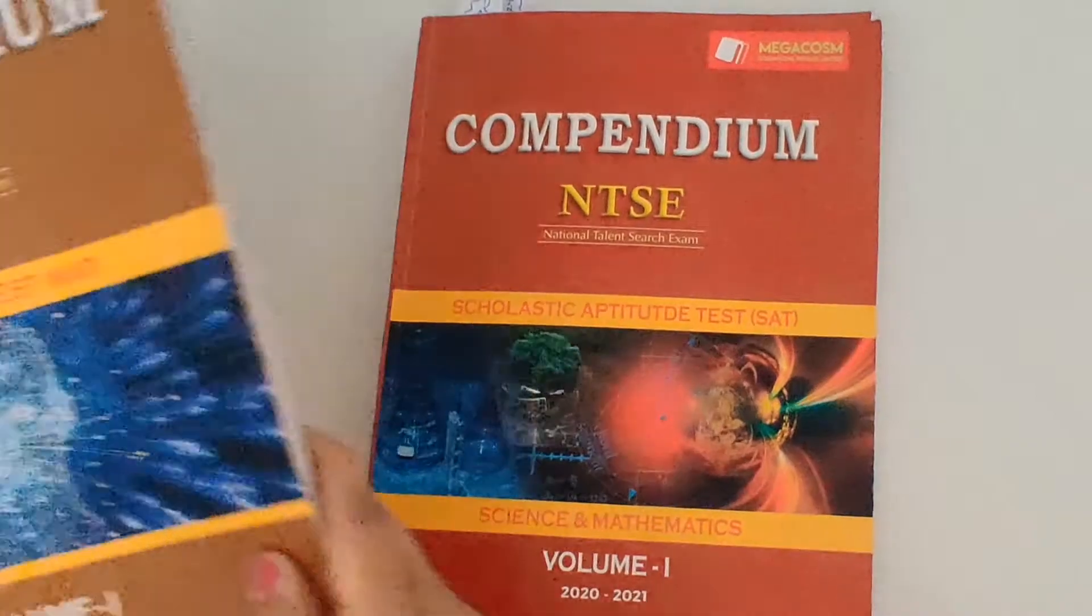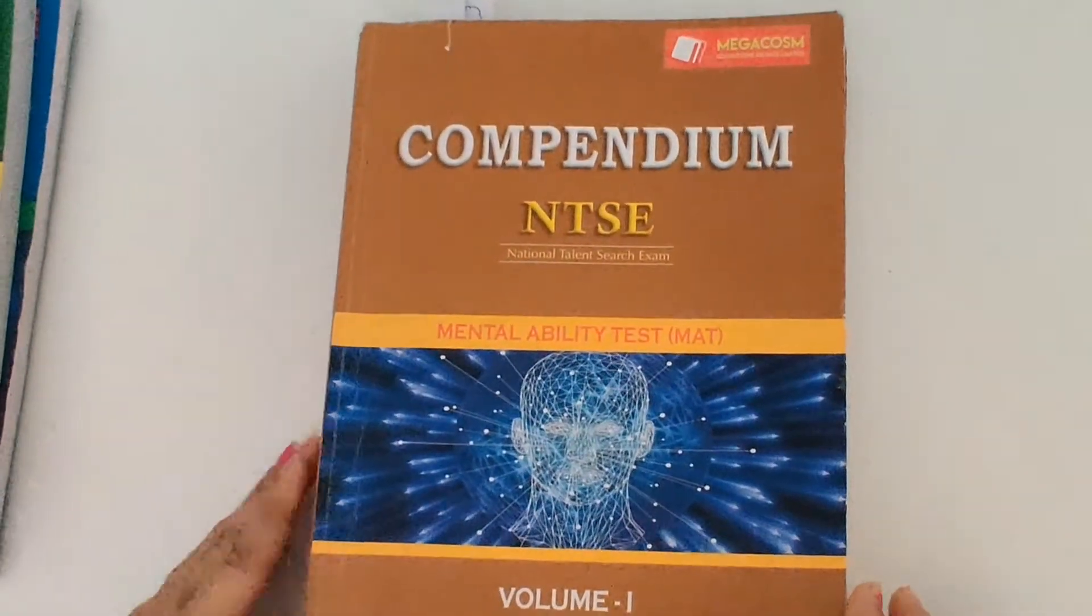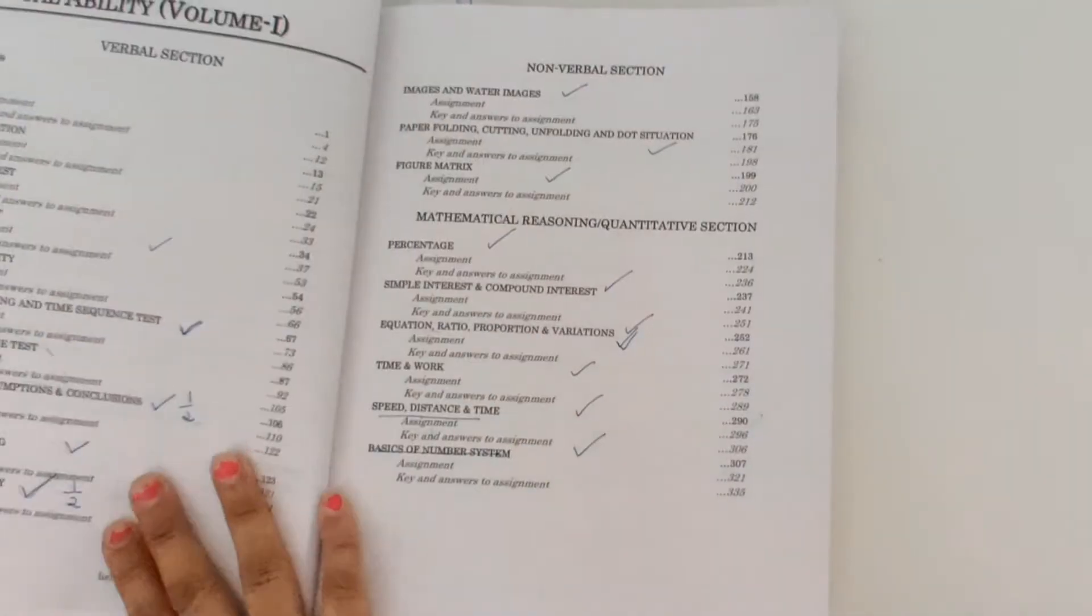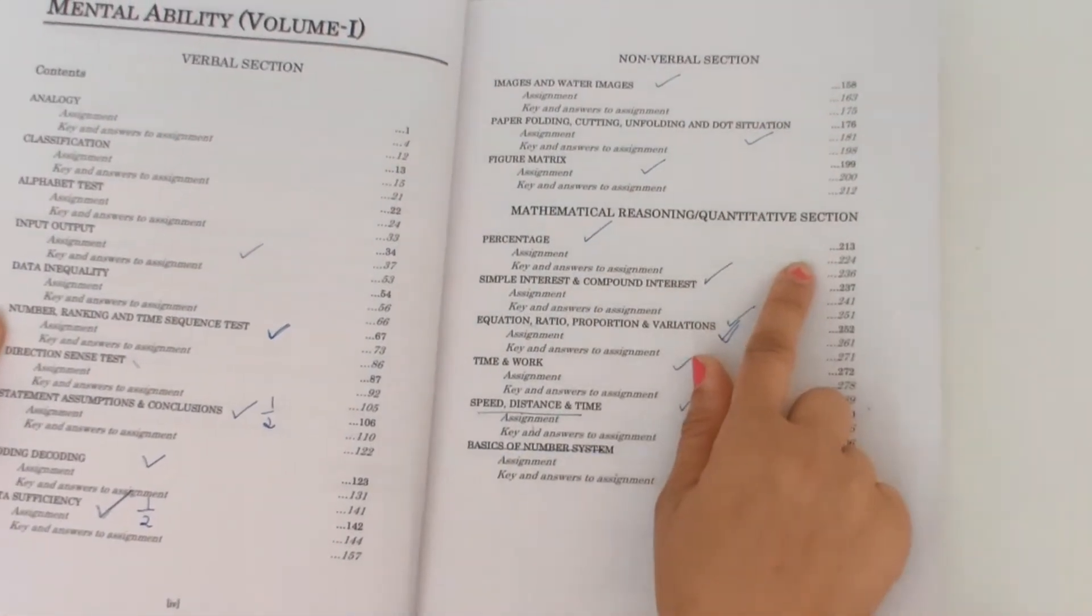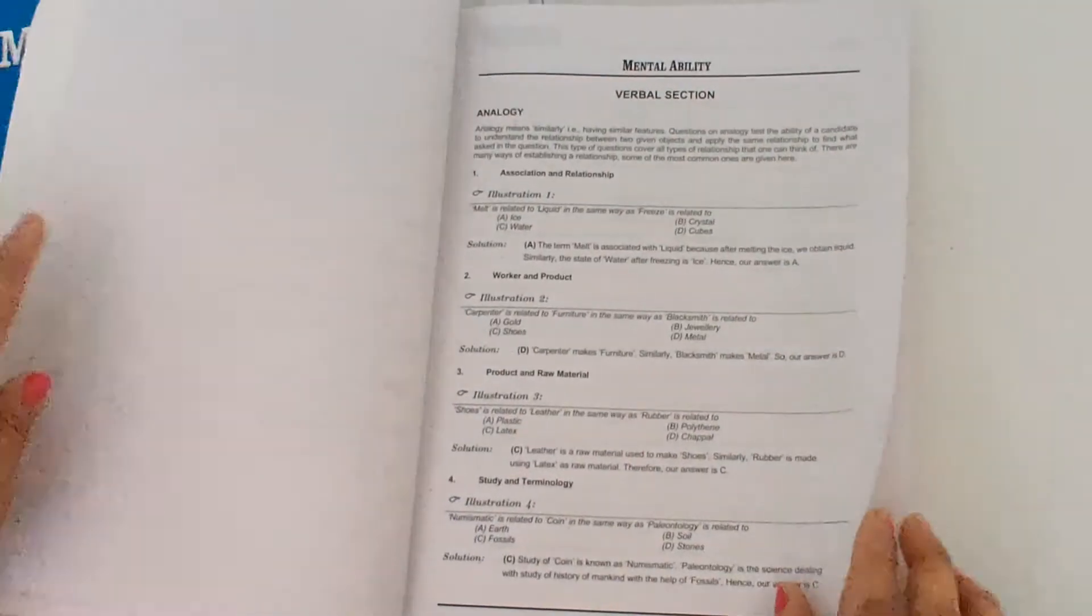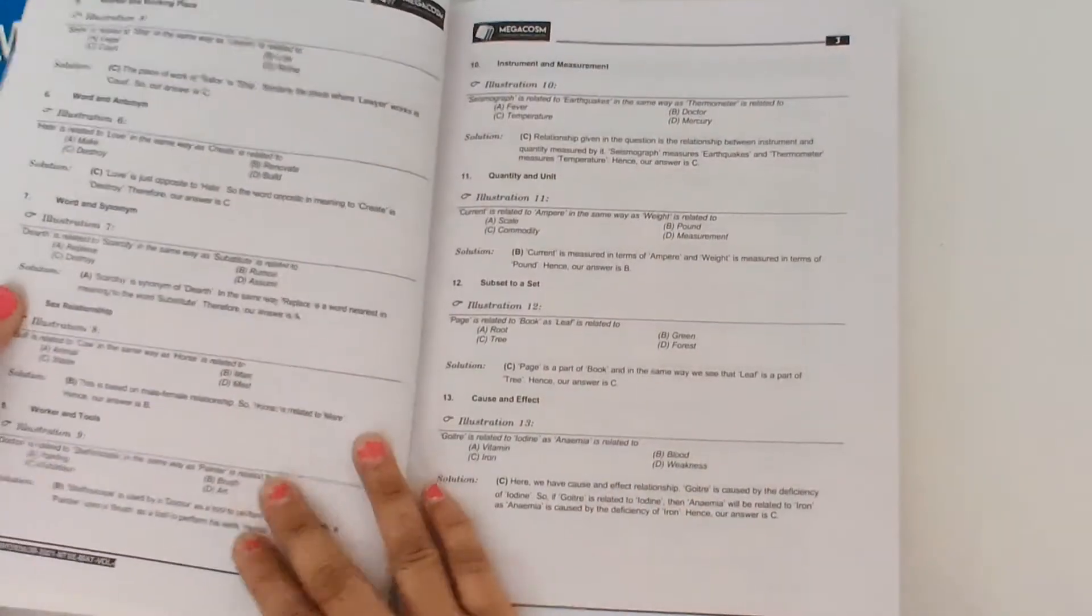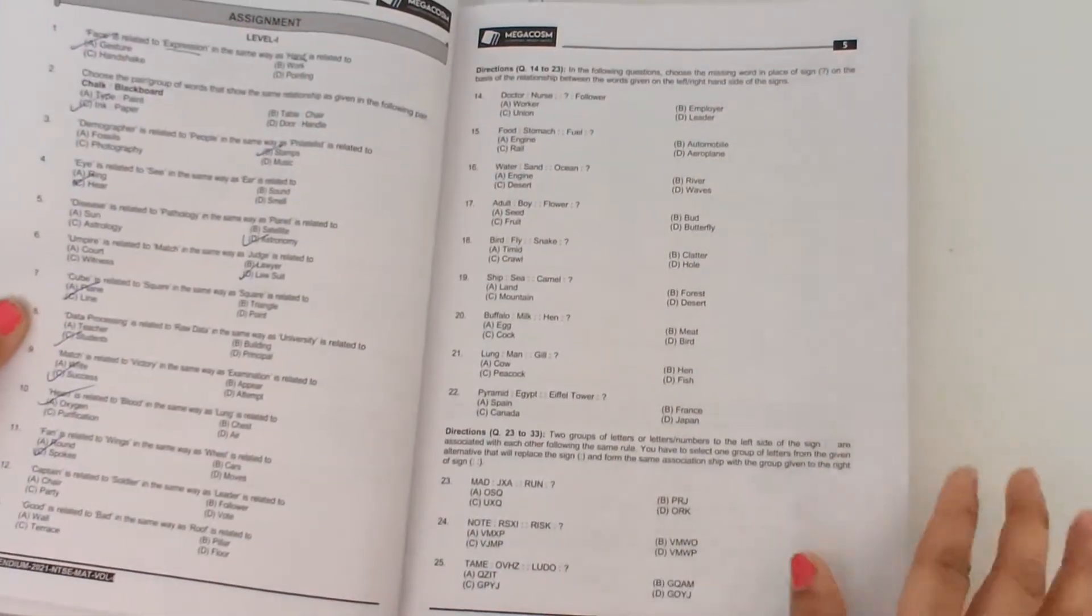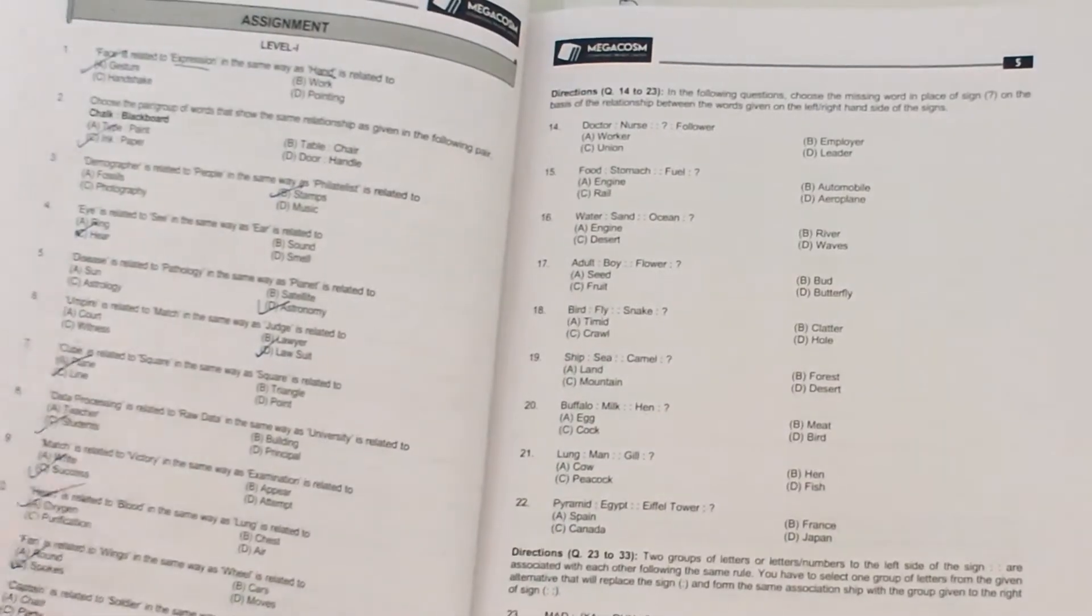Now this is the second one specially designed for mental ability test of NTSE. They cover all the verbal section, non-verbal section and mathematical reasoning section in this book. For each chapter there are many illustrations meaning solved problems and then MCQs, and this MAT book is specially divided into three levels.